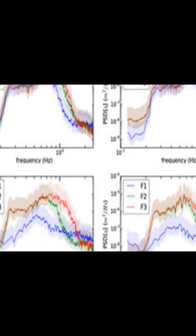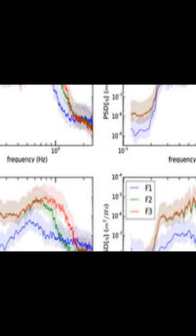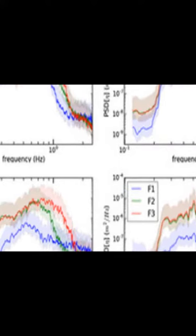The IMUs recorded the wave's frequency-dependent spatial damping, which was then compared with the one-layer model of Weber from 1987.